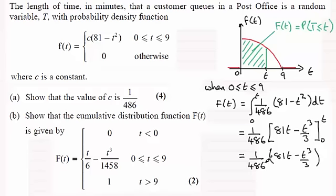And if you multiply through by 1 over 486, what you get is T over 6 minus T cubed over 1458. And that is this part here for T between 0 and 9.